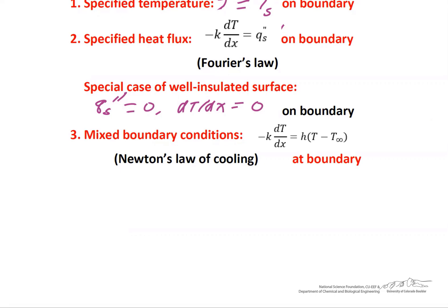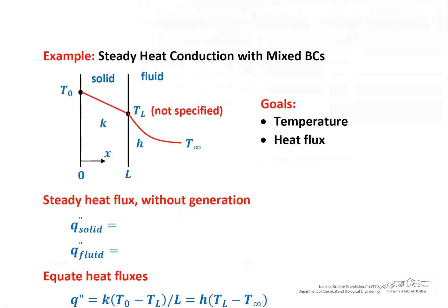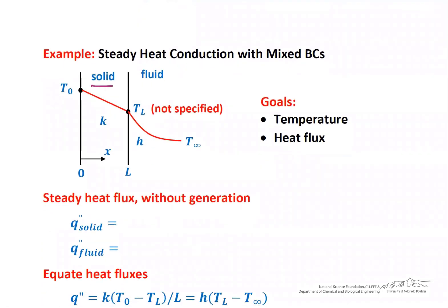Now let's look at an example of applying boundary conditions. We consider a solid adjacent to a fluid. The left-hand side of the solid has a fixed temperature boundary condition, and the right-hand side has a mixed boundary condition. We have thermal conduction through the solid and convection with a heat transfer coefficient through the fluid. There will be a temperature at the wall on the right-hand side, but it's not specified — it's something we have to find as part of the solution.